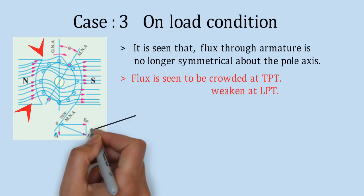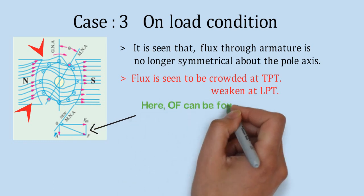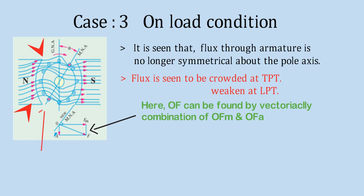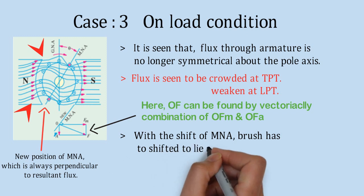Now, new resultant flux can be calculated by vectorial summation of armature flux and field flux. As a result, position of MNA got changed. Hence, brush position also has to be changed in order to avoid sparking.